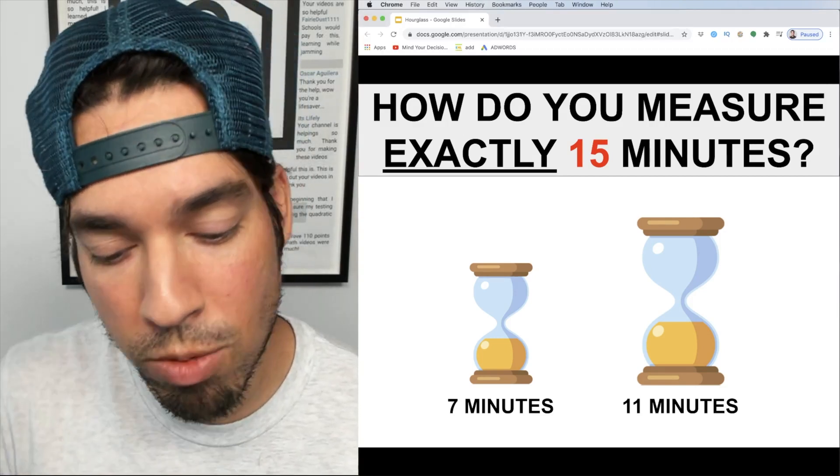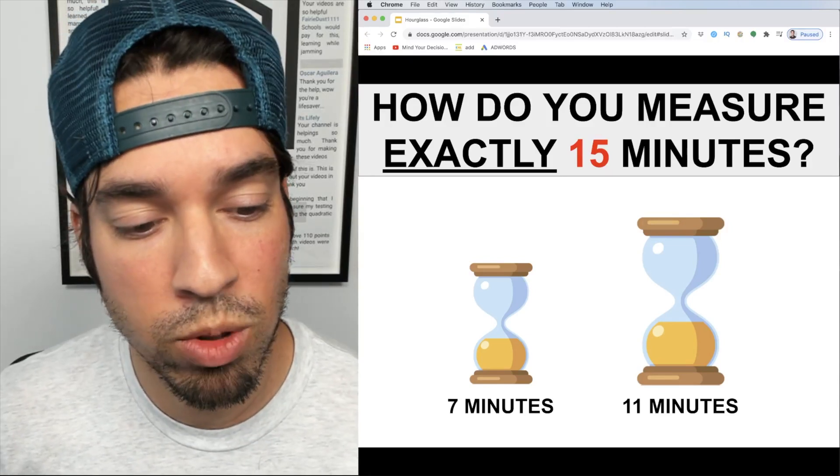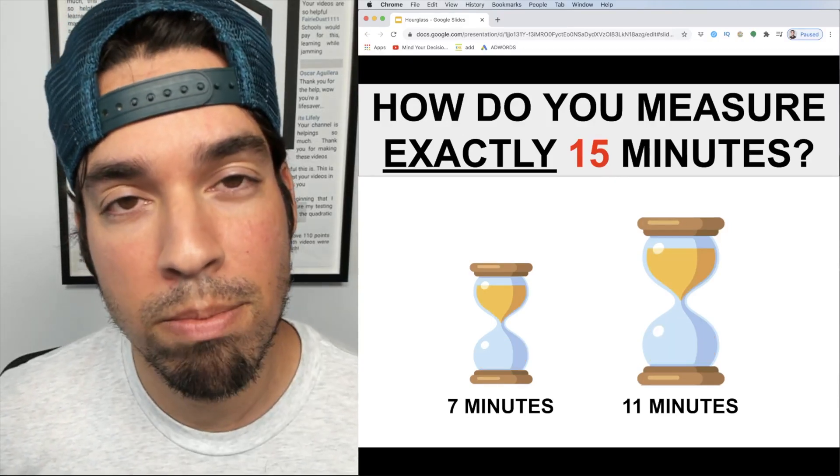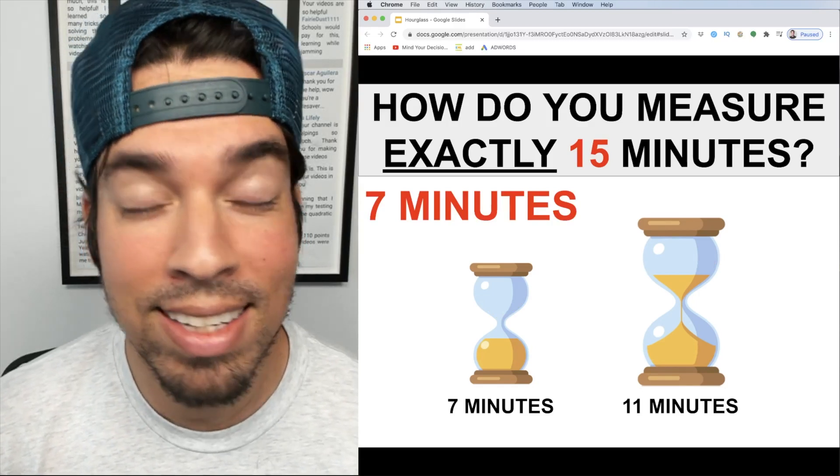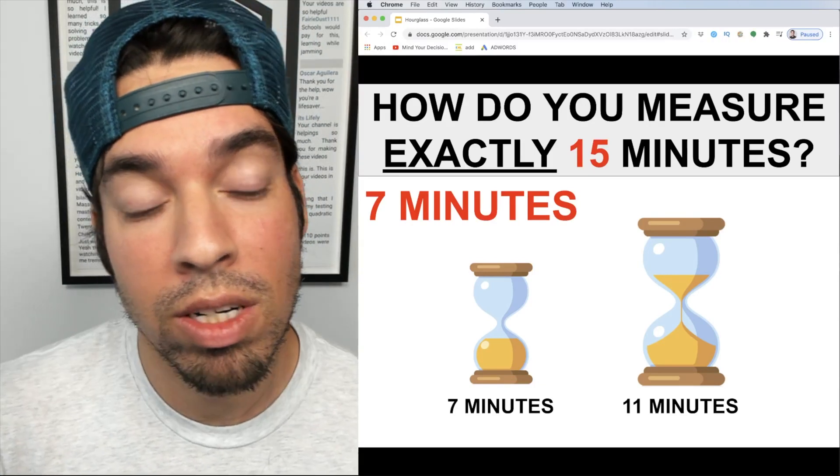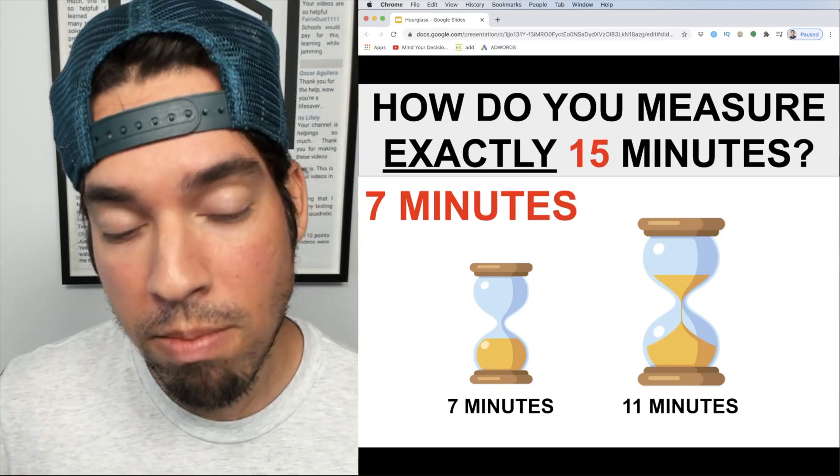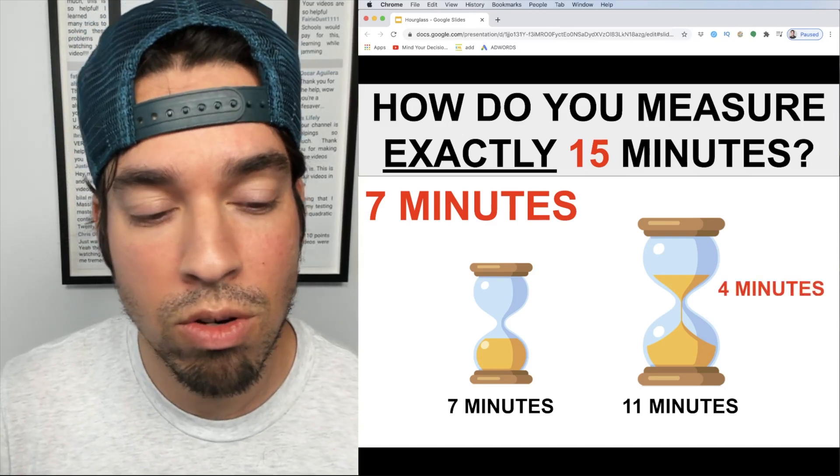So here we go, we've got the two timers. The first thing I'm gonna do is start by flipping both timers over simultaneously. We're gonna let them both run the course and the first one's gonna reach the bottom at seven minutes, right? But what's interesting to note is that one's run out, but how much sand do I have left in that 11 minute timer? I've got four minutes left.